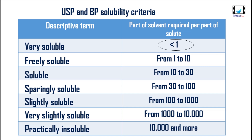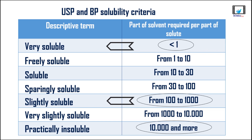The seven terms continued: very slightly soluble, and practically insoluble. We describe a substance by one of these terms depending on the number of parts of solvent required to dissolve one part of a solute. For example, if we need less than one milliliter of water to dissolve one gram of substance, that substance is considered very soluble. If we need 100 to 1,000 milliliters for one gram, we call it slightly soluble. And if more than 10,000 milliliters fails to dissolve one gram, that substance is practically insoluble in that solvent.